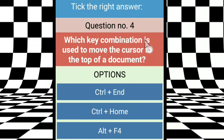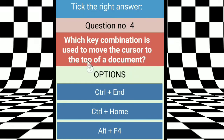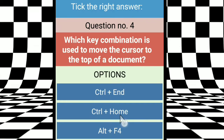Question four: which key combination is used to move the cursor to the top of a document? Ctrl+End is used to go to the end of a document. Ctrl+Home is used to move to the top of the document. So the right answer is Ctrl+Home.